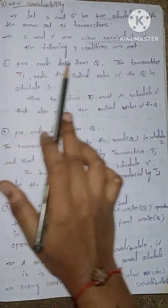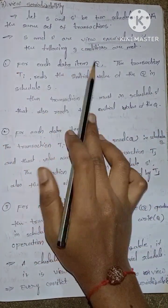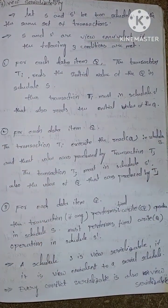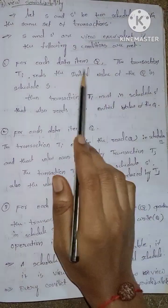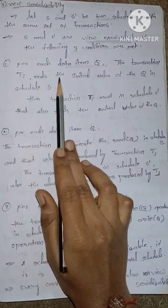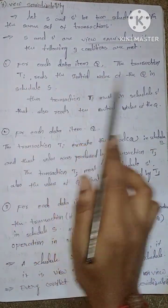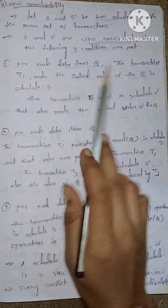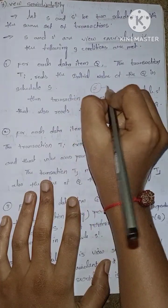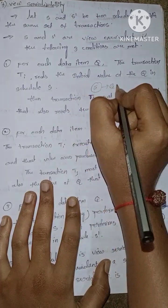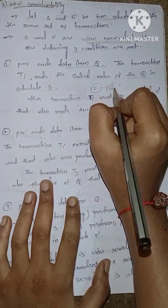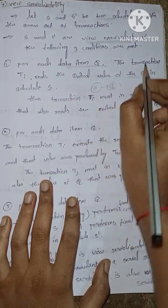The first condition: for each data item Q, the transaction Ti that reads the initial value of Q in schedule S must also read the initial value of Q in schedule S'.